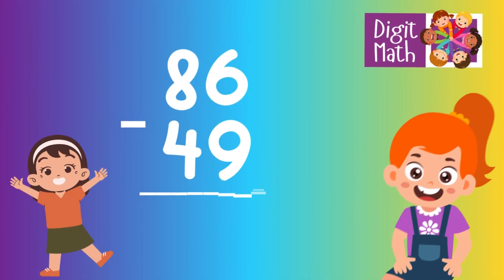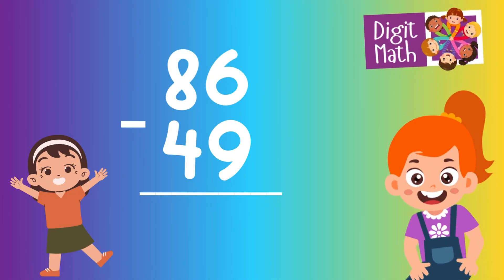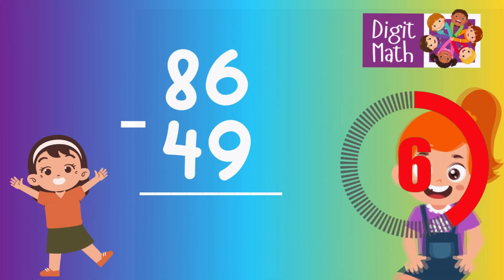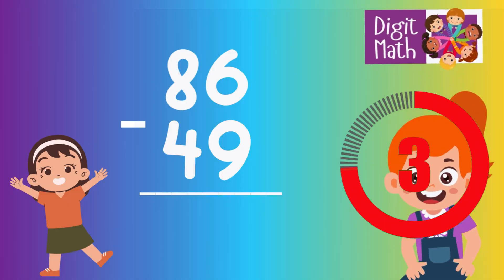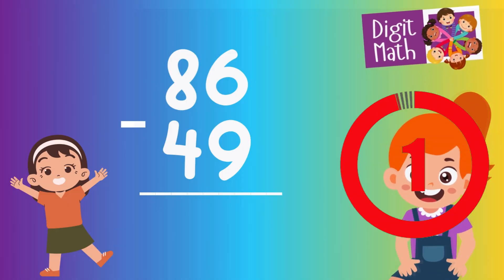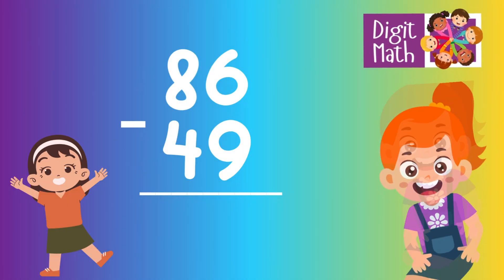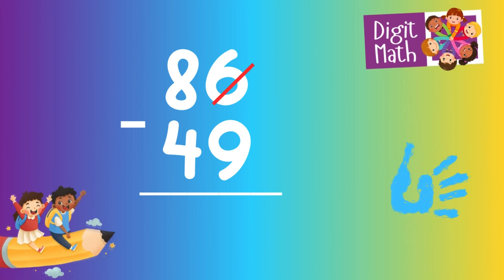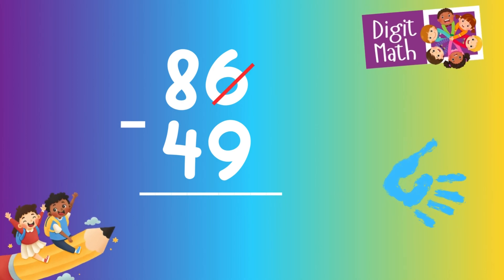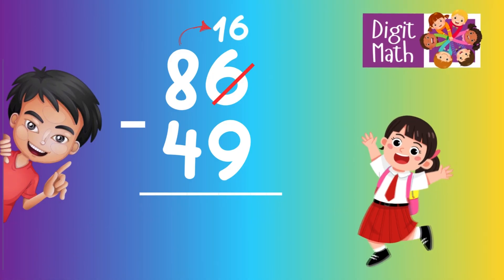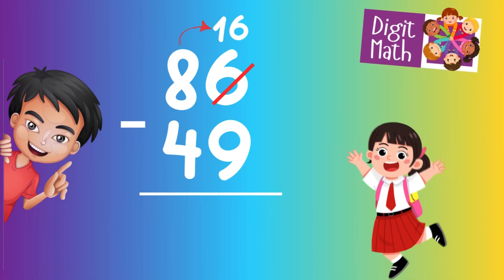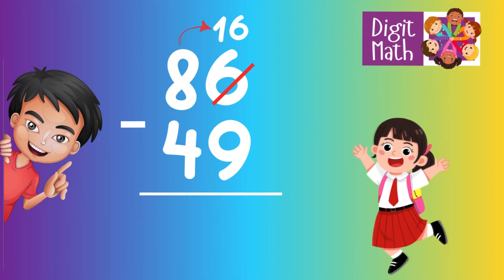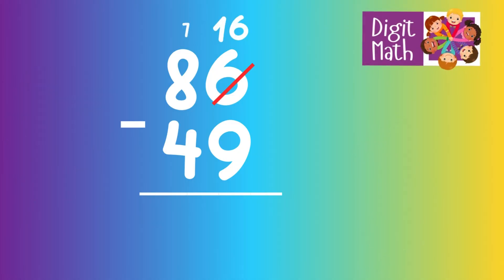86 minus 49 is... Time to think. In the Units column, we have 6 minus 9. Since it's not possible to subtract 9 from 6, we need to borrow from the Tens column. In the Tens column, we have 8. We take 1 from the Tens, leaving 7 in the Tens column and turning the Units column into 16.